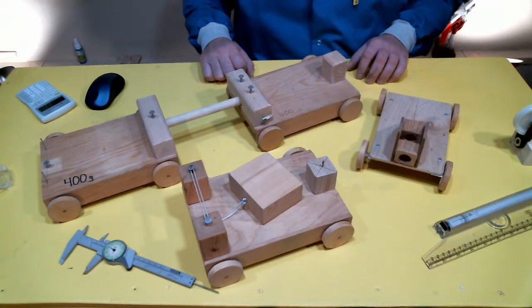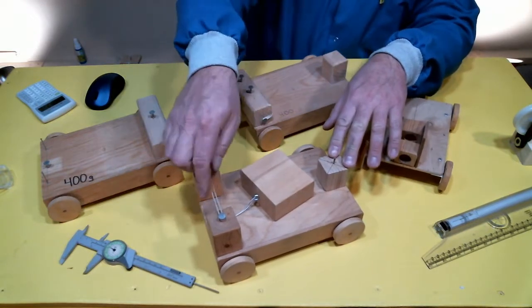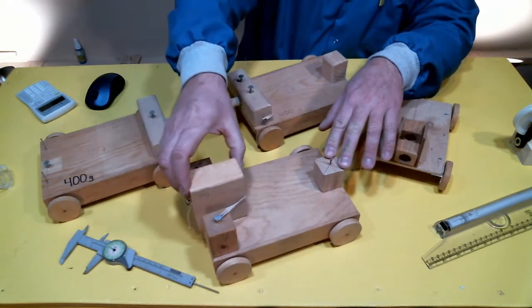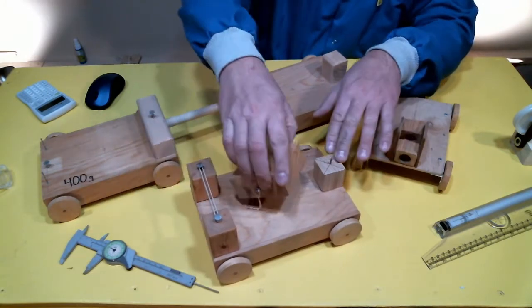Here's an example of some of the carts I use in my experiments. This cart employs a rubber band to allow me to shoot blocks of wood off it so I can investigate things like Newton's laws.